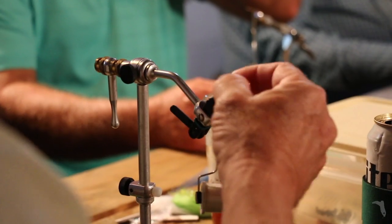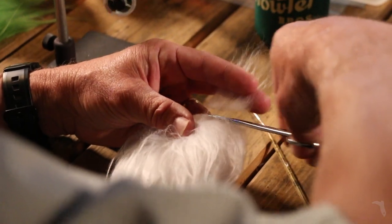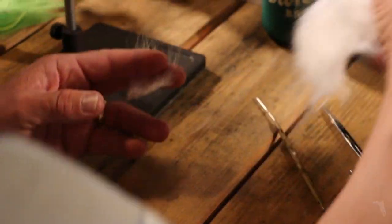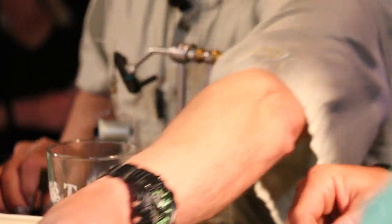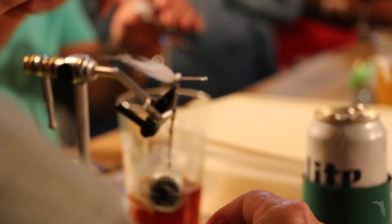Then you get your craft fur, lighter color on the bottom, darker on top. Put the light color on, because the fly's going to ride up, the light color goes on first.